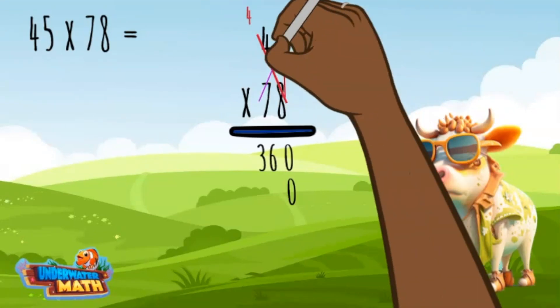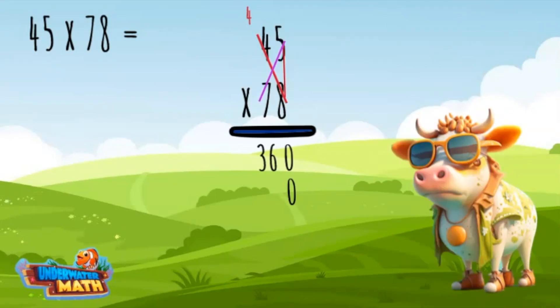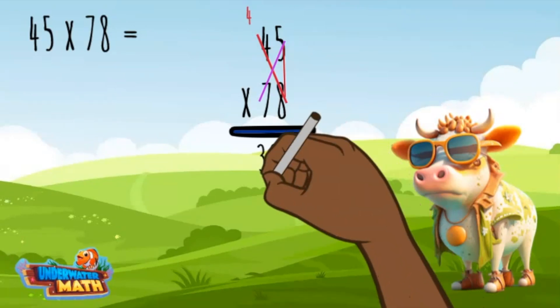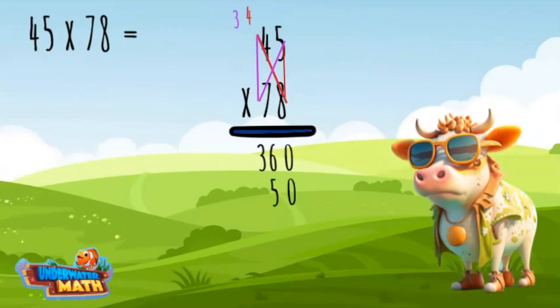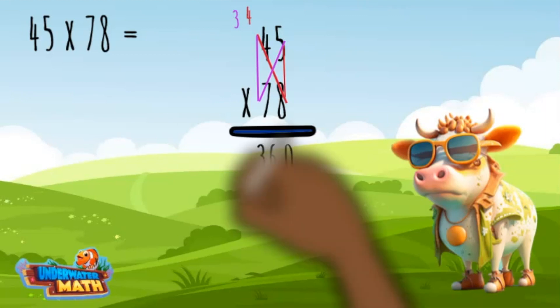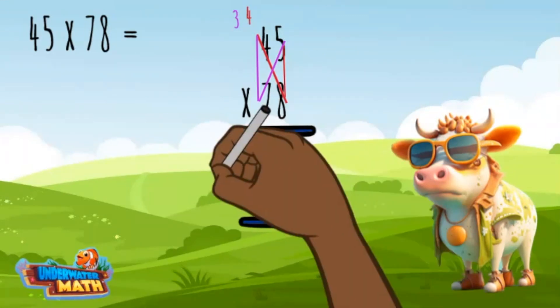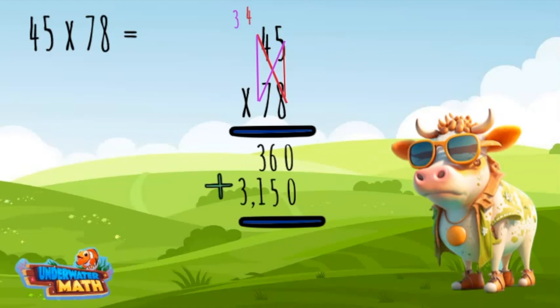Seven times five equals 35. The five goes below the problem, the three is carried over to the tens place. Seven times four plus three equals 31. To find the product of the entire problem, we add line one and two.